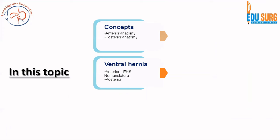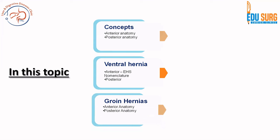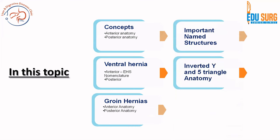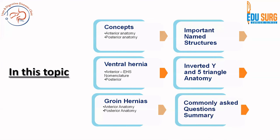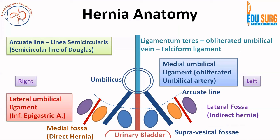If you have missed the previous parts, do have a look. We have discussed the concepts of anterior and posterior anatomy, the nomenclature of ventral hernia, and the laparoscopic view of ventral hernia. We have also discussed the groin hernias from the anterior aspect. Furtado's classification is what is remaining, followed by some important questions and named structures in the next and final part.